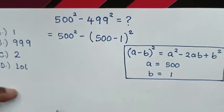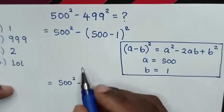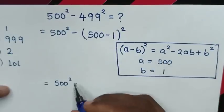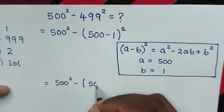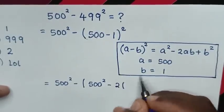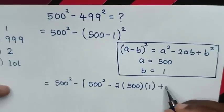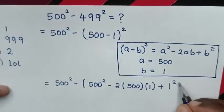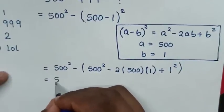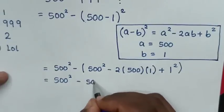Then in the next step, our expression will be equal to 500 square, then minus — this part is in this form, it is also in this form. So A square is 500 square, then minus 2AB, so it will be minus 2 times A is 500 times B is 1, then plus B square is 1 square. Then in the next step, it will be equal to this minus this 500 square, then this negative times this to be negative 500 square.